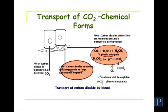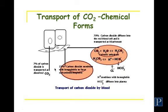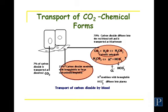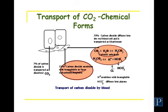The majority of carbon dioxide is transported in the blood as bicarbonate, and it's a reaction that takes place within the red blood cell. Red blood cells contain an enzyme called carbonic anhydrase. Other cells in your body also contain carbonic anhydrase, but the fact that red blood cells contain this enzyme facilitates the reaction and makes it very quick.